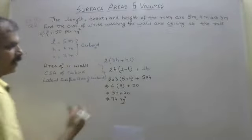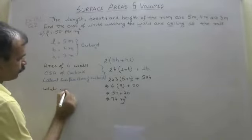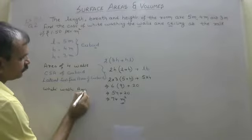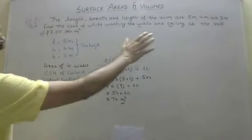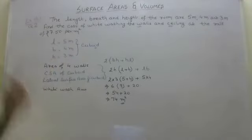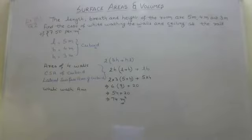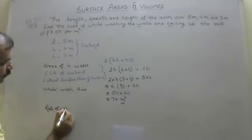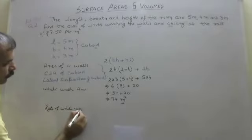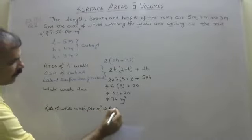So 74 m² is the whitewash area. Now, the problem says the rate of whitewashing is Rs.7.50 per meter square. So the rate of whitewash per meter square is Rs.7.50.